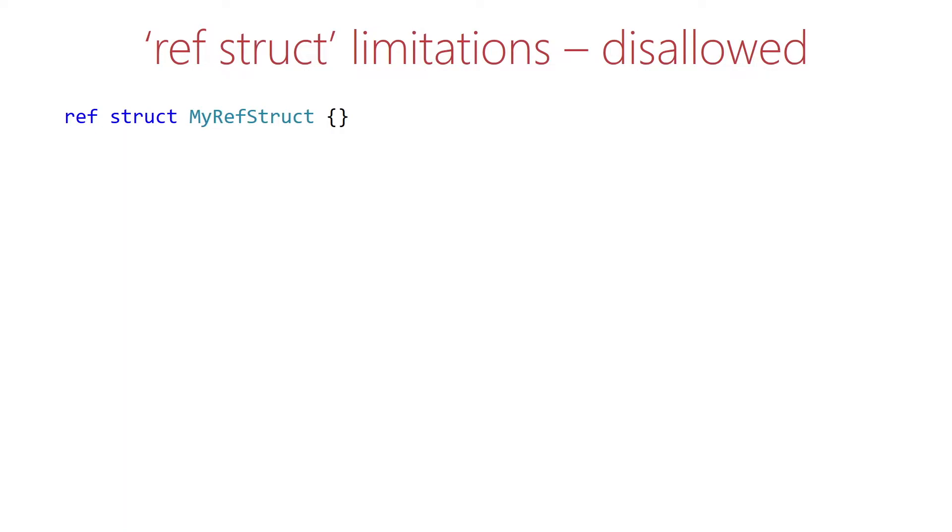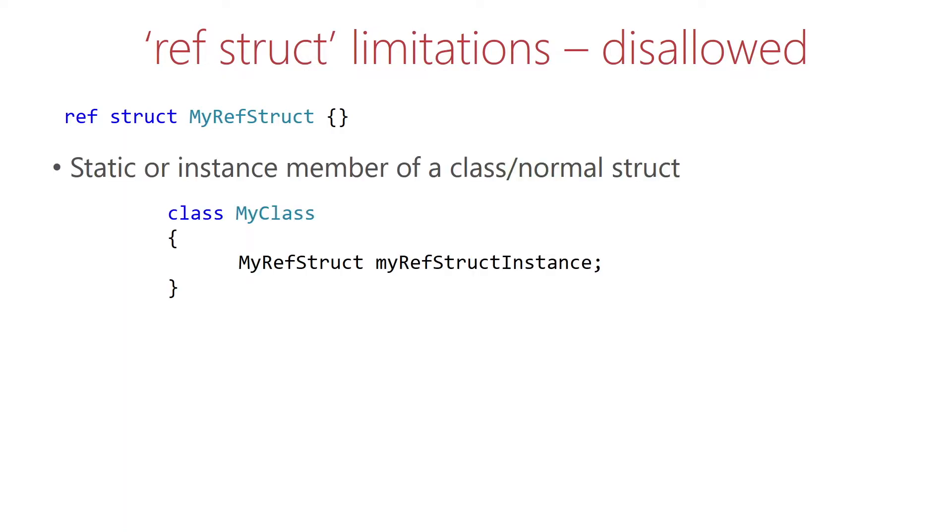For example, a ref struct cannot be a static or an instance member of a class or a normal struct. This means that the code on the slide doesn't compile since the compiler shows an error.